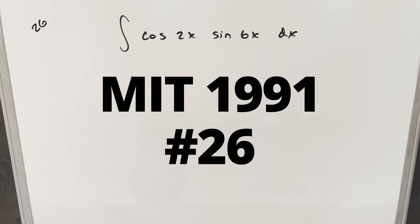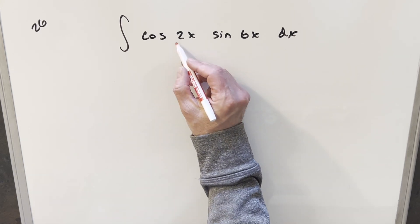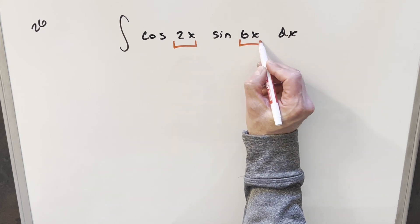We have the integral of cosine 2x times sine 6x dx. Okay, the big thing to notice here is just the fact that we've got different angles on the cosine and sine.